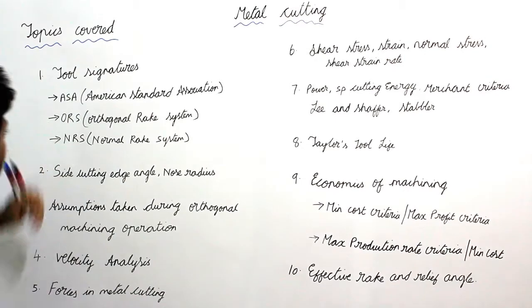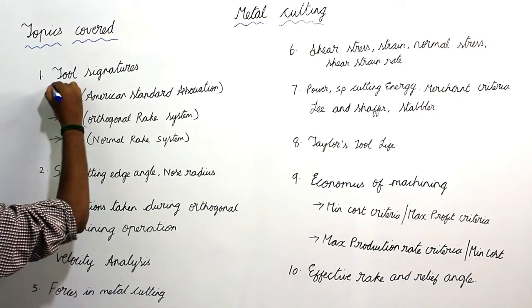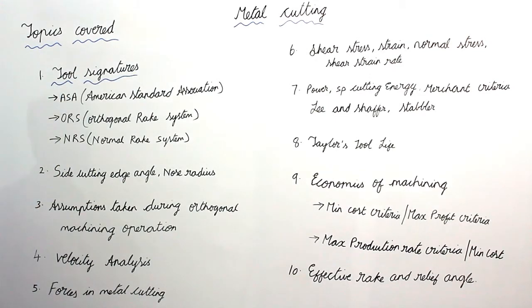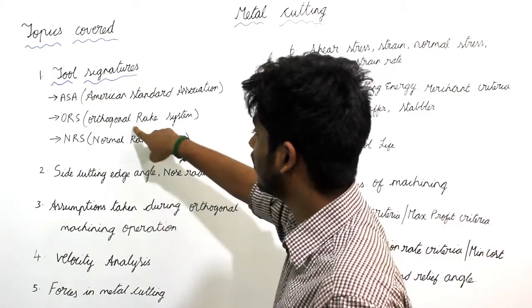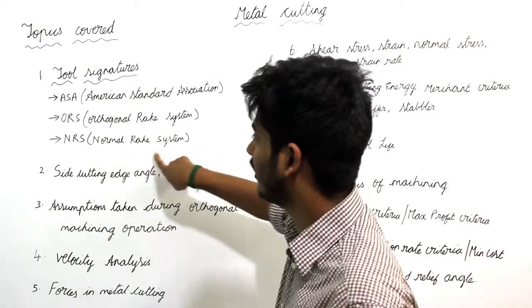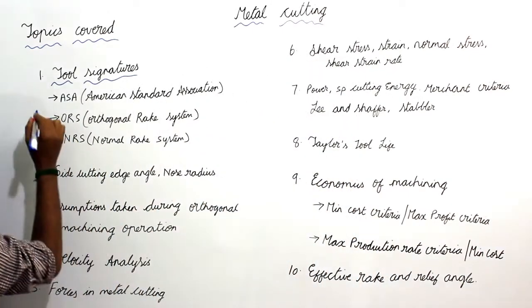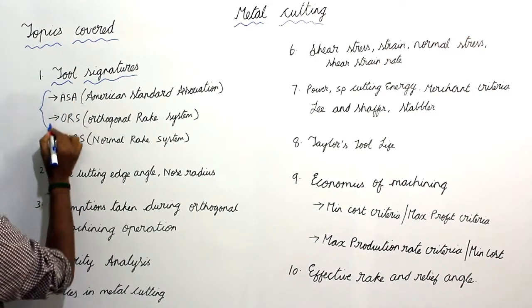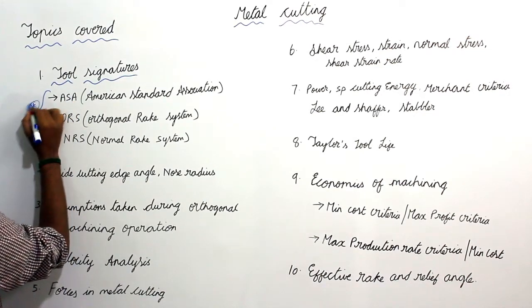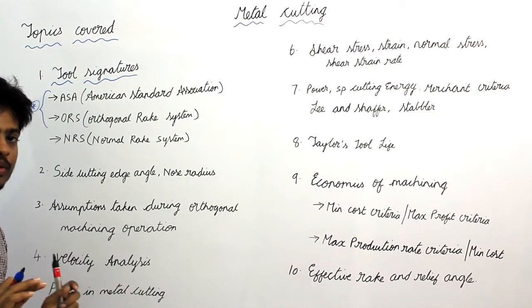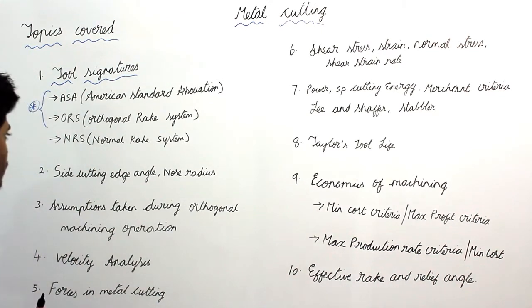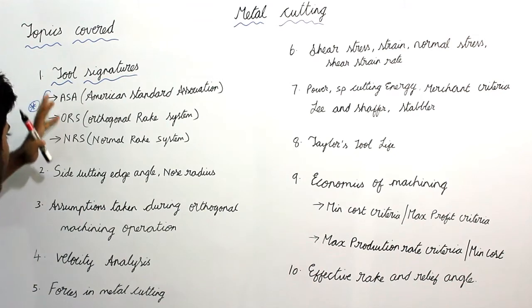First is tool signatures. Under this topic we will study about three systems: American Standard Association, Orthogonal Rake System, and Normal Rake System. This American Standard and Orthogonal Rake System are important. The Normal Rake System, they haven't asked any questions for GATE exam. So these two are important, the first two are important.